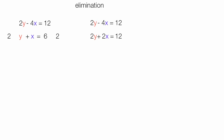Two times six is twelve. I'm going to subtract the second equation from the first equation. Keep in mind I'm subtracting everything in the second equation. Two y minus two y is, of course, zero. Negative four x minus two x is negative six x.